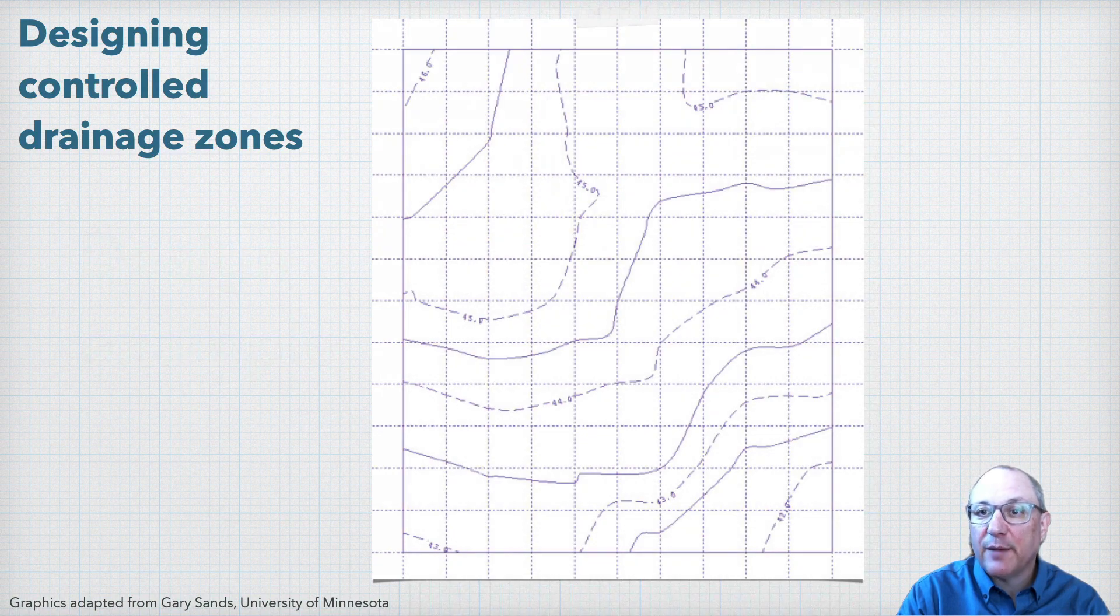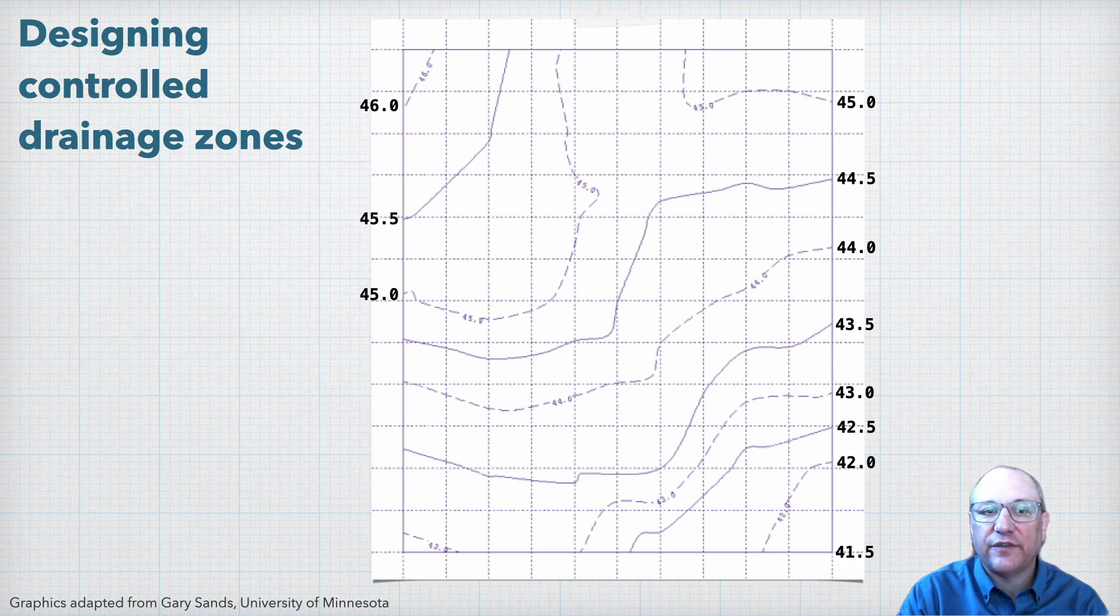So here's a contour map of an example field, and then here are our contour elevations ranging from 41.5 feet to 46 feet.